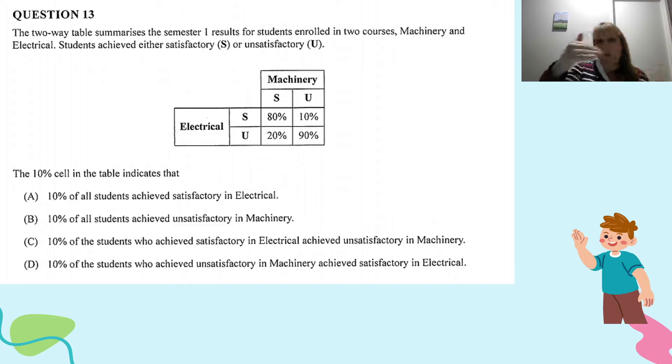Now, if we just skip through the different options here. A, 10% of all students achieved satisfactory in Electrical. We don't know that. We don't know how many, what percentage passed Machinery, we don't know what percentage passed Electrical.